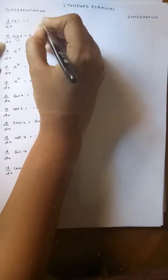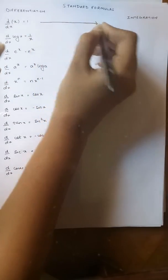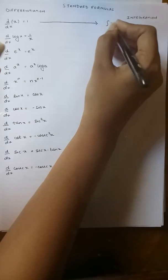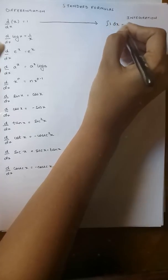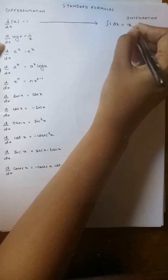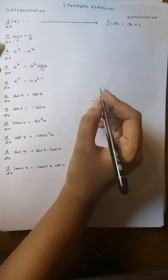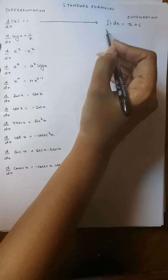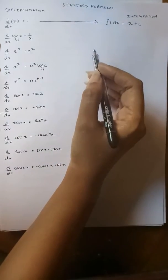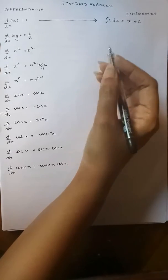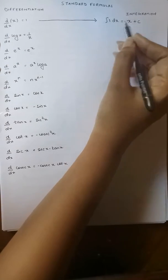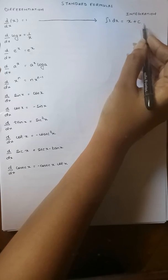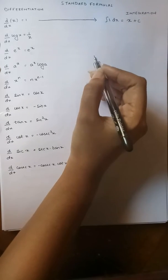So let's start. As we know, differentiation of x with respect to x gives us 1. So integration of 1 with respect to x will give us x plus c. Always remember that whenever we have an integration without the upper limit and the lower limit, that is known as indefinite integration. In such an integration you add the final answer with c, that is nothing but an arbitrary constant.